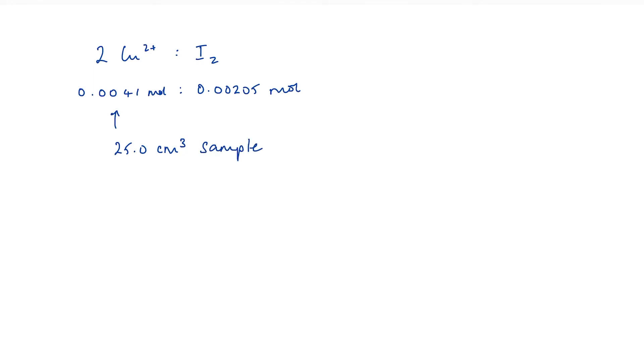So it's quite straightforward. If I know how much was in a 25 centimetre cubed sample in the original solution, which was 250 centimetres cubed, I'm going to have 10 times as much. So we've got 0.041 moles of copper. Now, clearly, the ratio of copper 2+ to copper is going to be 1 to 1. So that is the number of moles of copper in the coin.